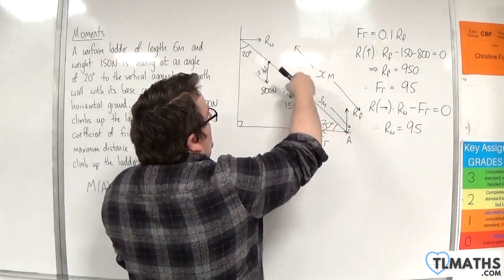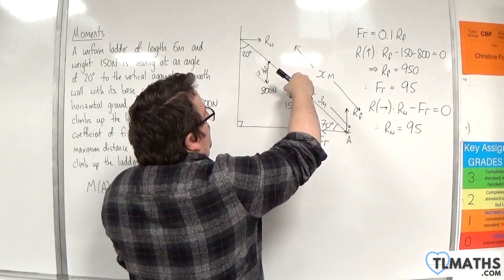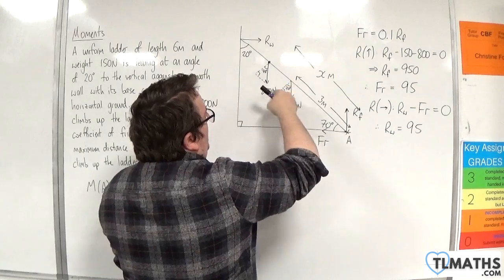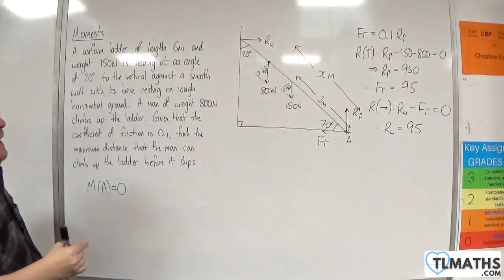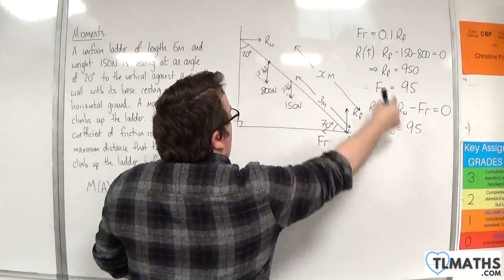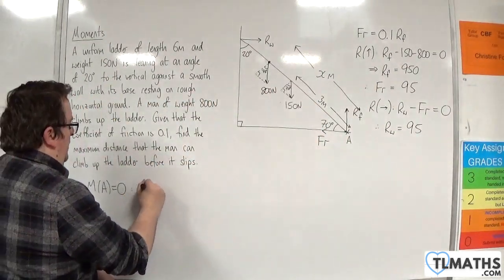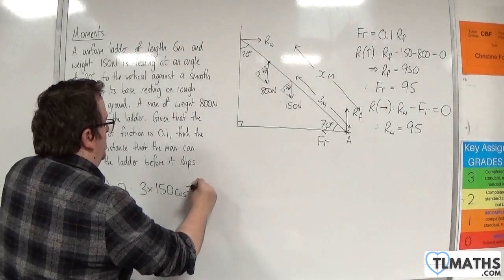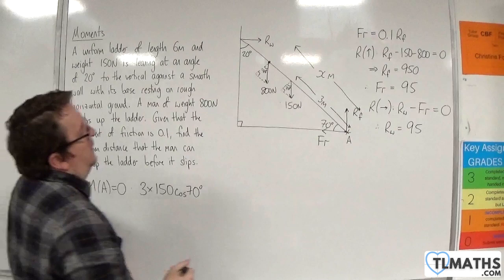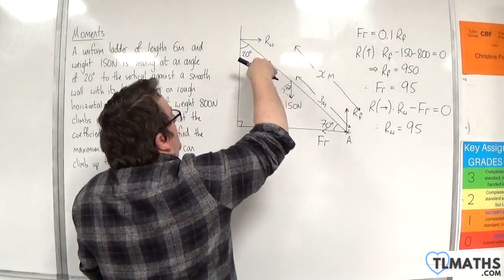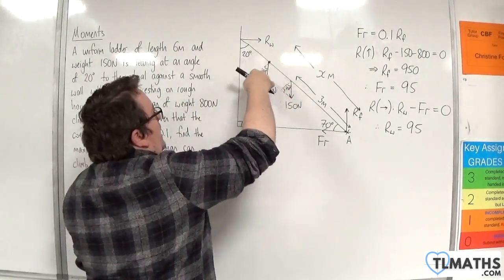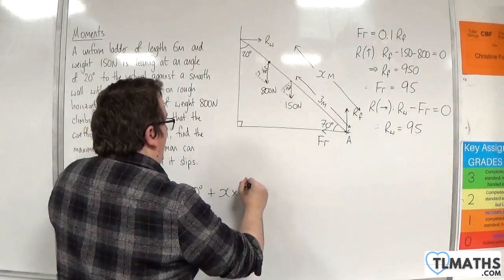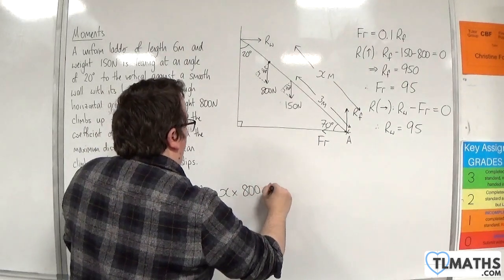First of all, we are 3 meters away from the 150 newton force. Now, that component is 150 cosine 70, and that's going to be going around in an anti-clockwise motion, so that's positive. So 3 times 150 cosine of 70 degrees. We're x meters away from the component of this force, so 800 cosine 70. So, plus x times 800 cosine 70.